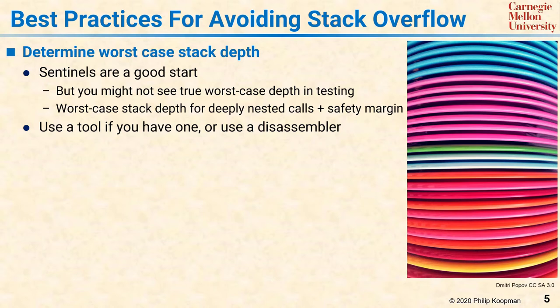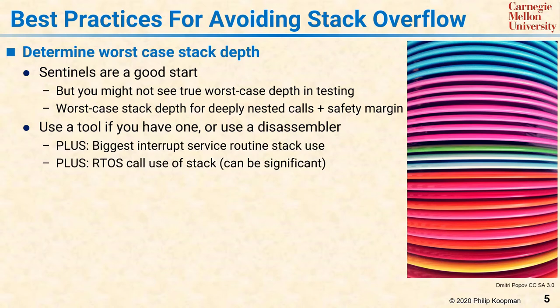When doing this analysis, make sure you find the actual worst case and add in a safety margin. In processors that have multiple levels of interrupt priority, you have to be careful to make sure you look at one interrupt from each priority level if they can be concurrently active and add all of them up to get the worst case depth. And don't forget that interrupt nesting might happen while you're in the middle of an operating system function that also uses a lot of stack. So, make sure you think through the true worst case situation when putting together your picture of worst case stack depth.